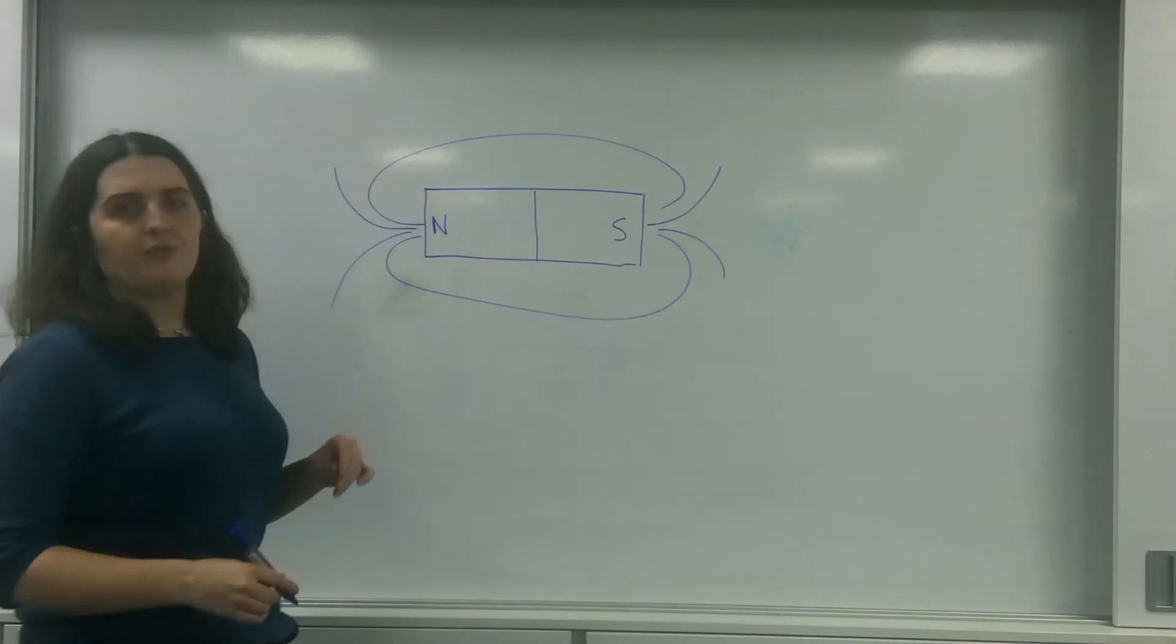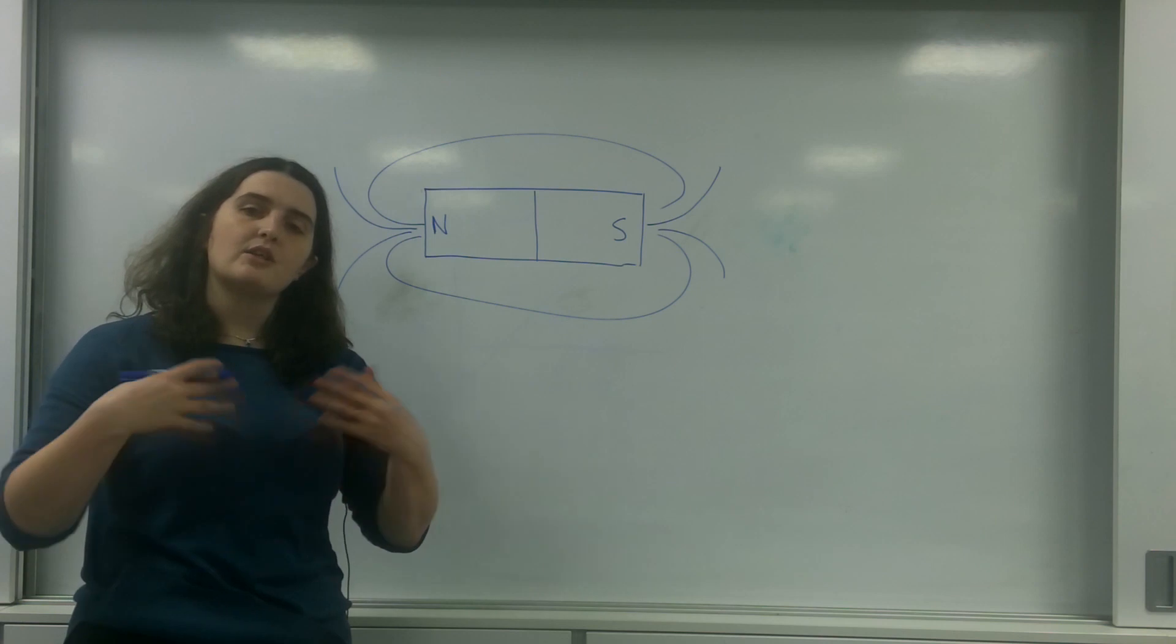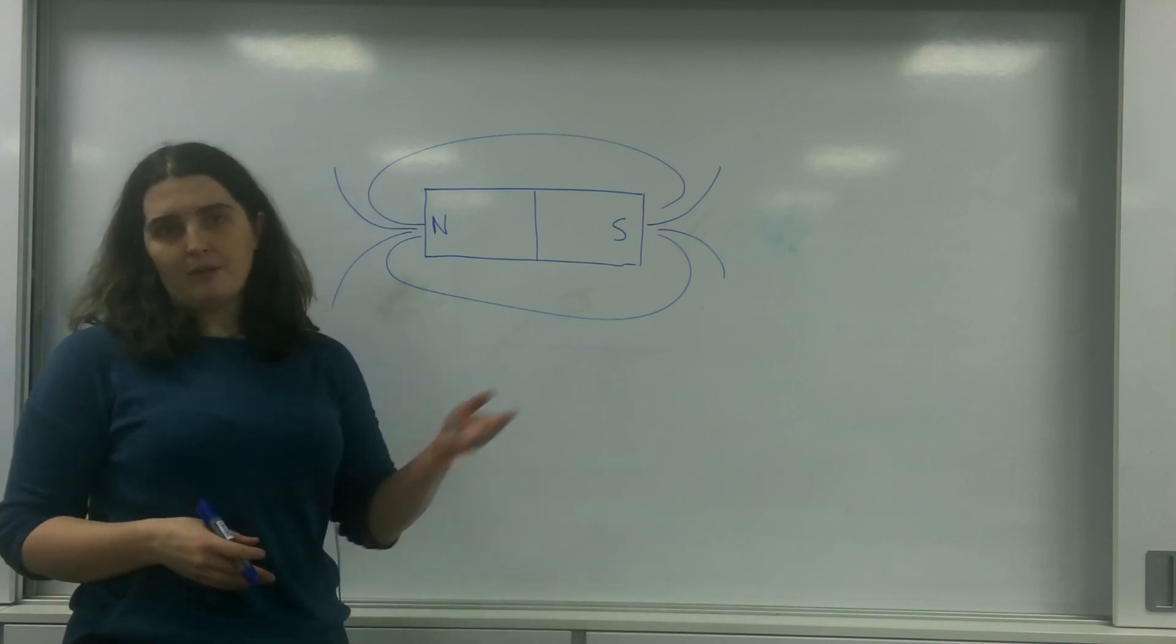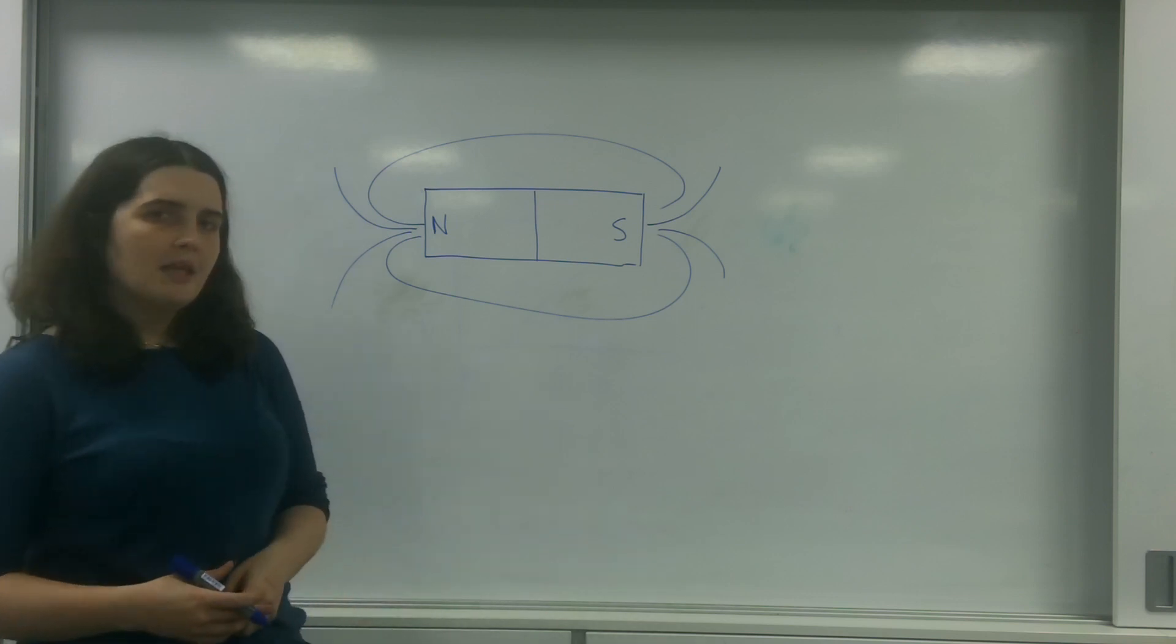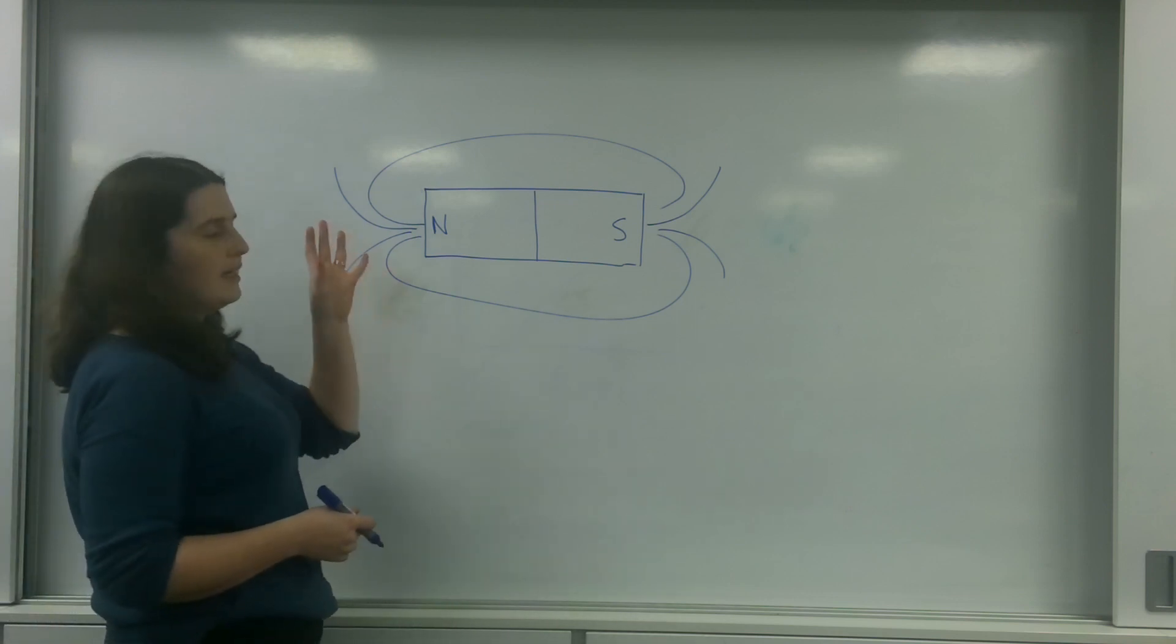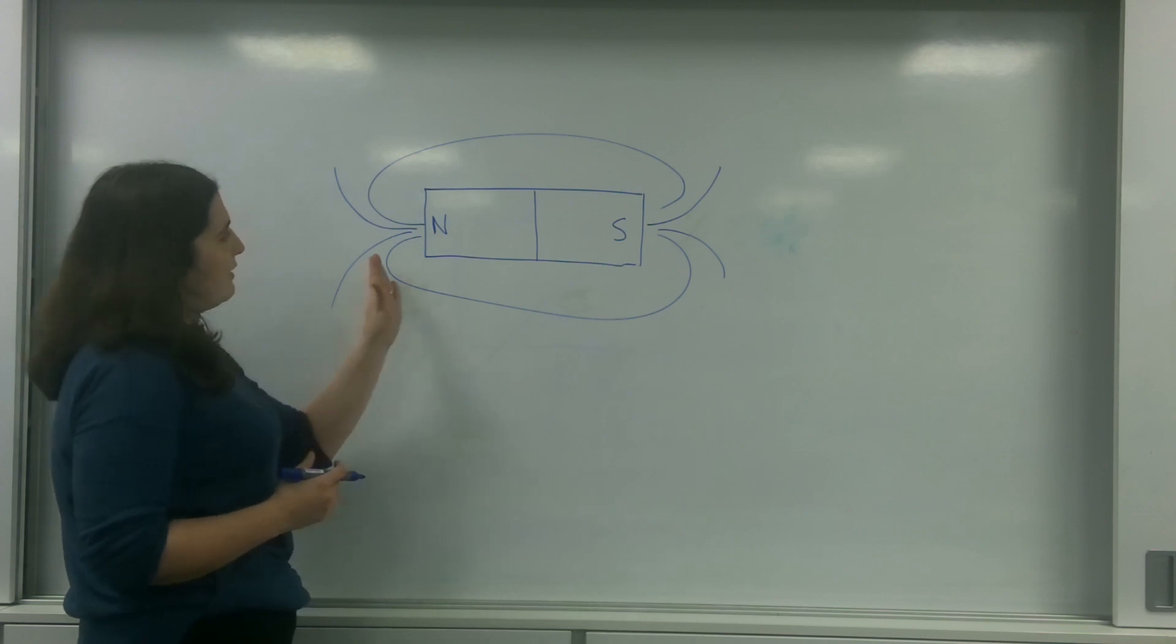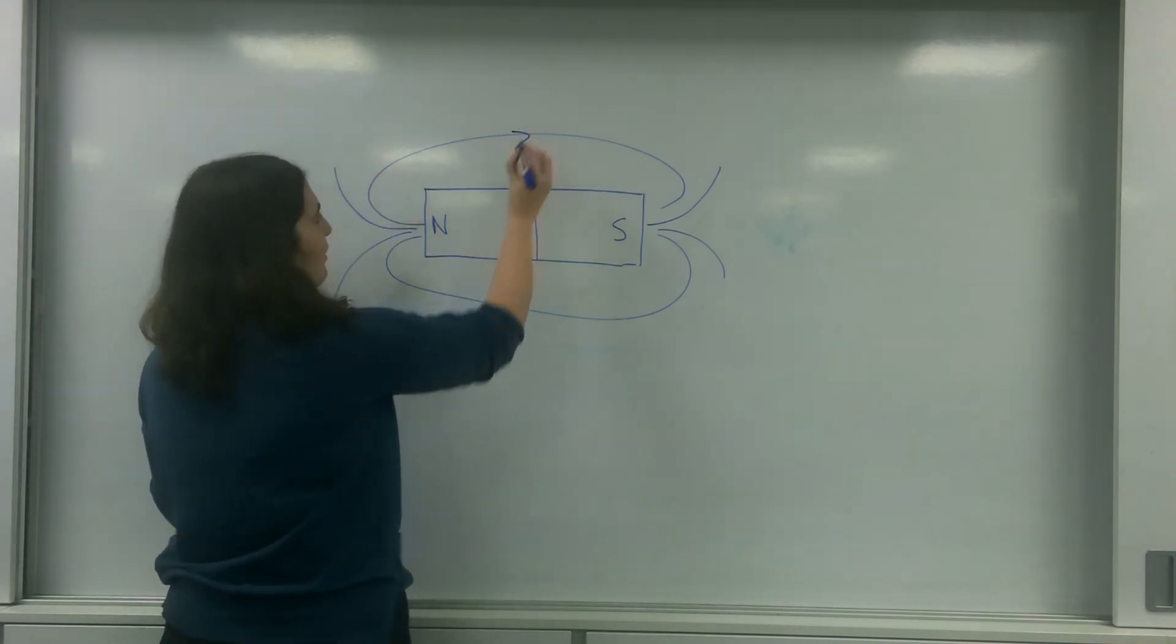And the direction of these field lines - so every field line has a direction. If they are attractive they would go towards, if they are repulsive the arrow would go away. It's important to understand that in a magnetic field the actual direction of the field goes from north to south.